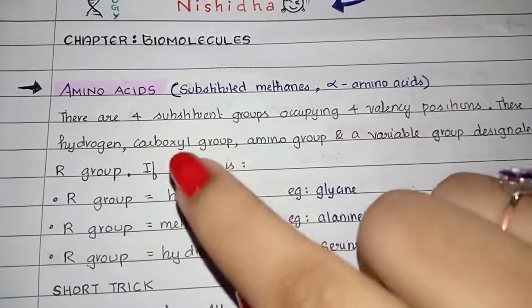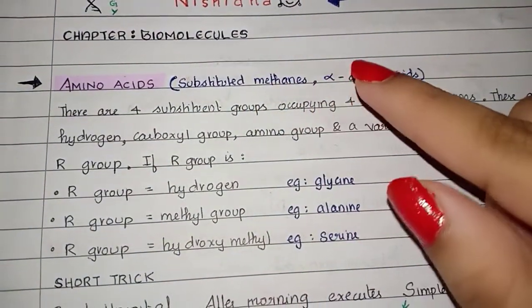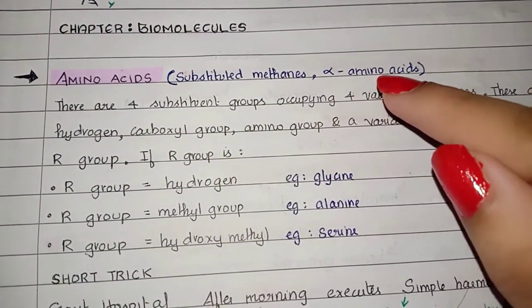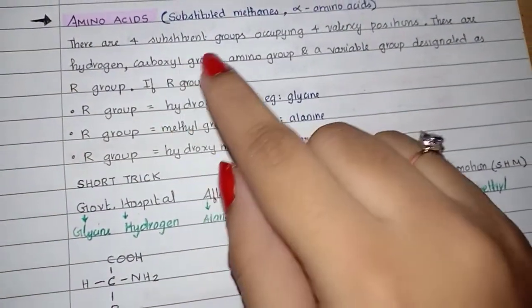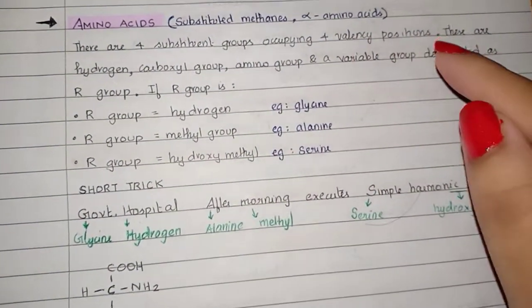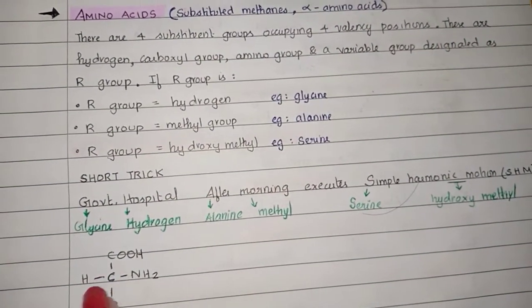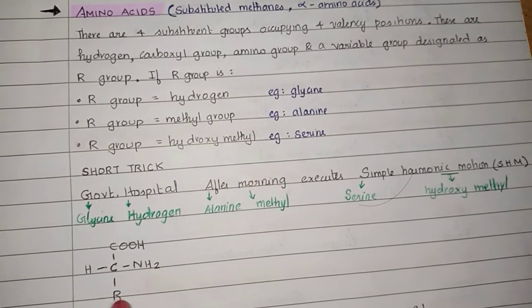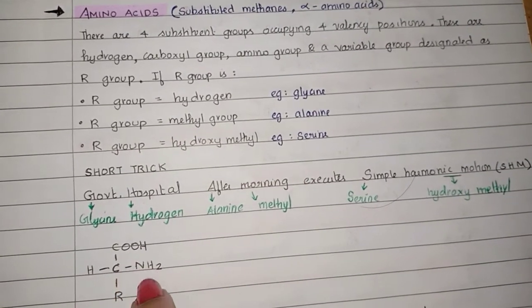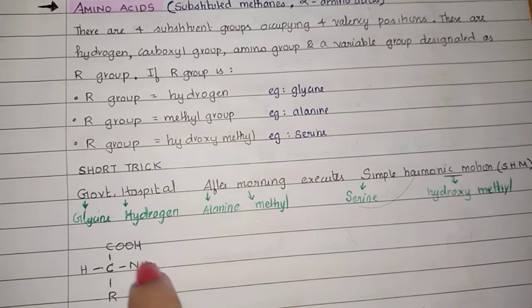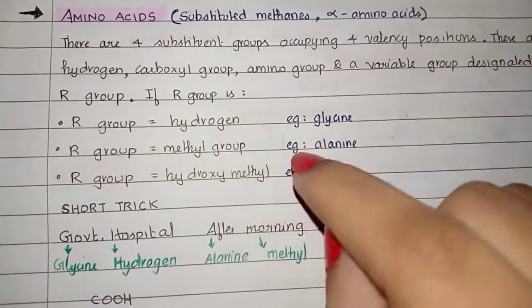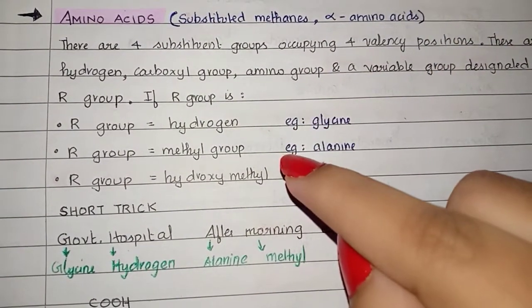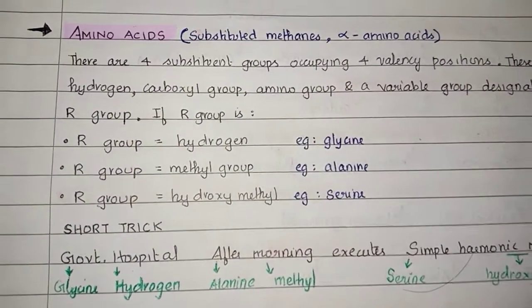Amino acids. Amino acids are also called substituted methanes or alpha amino acids. As you can see here, an amino acid consists of four substituted groups occupying four valence positions — one R group, hydrogen group, COOH group, and NH2 group, that is amino group, carboxyl group, hydrogen, and one R group. According to this R group — whether it is hydrogen, methyl group, or hydroxide — there are three types of amino acids.